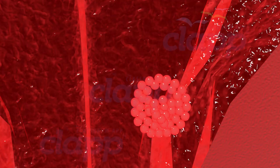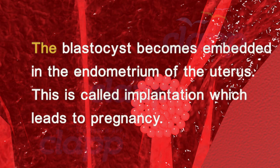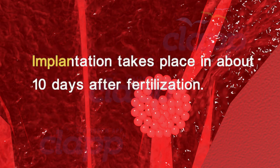The trophoblast then gets attached to the endometrium and the inner cell mass is differentiated into an embryo. After attachment, the uterine cells divide rapidly and cover the blastocyst. The blastocyst becomes embedded in the endometrium of the uterus. This is called implantation, which leads to pregnancy. Normally, implantation takes about 10 days after fertilization.